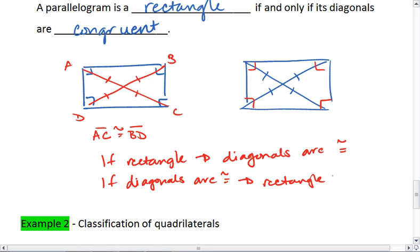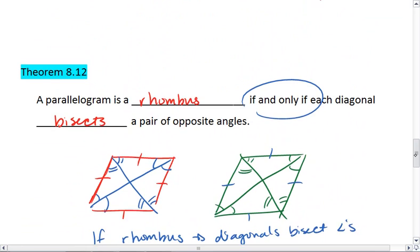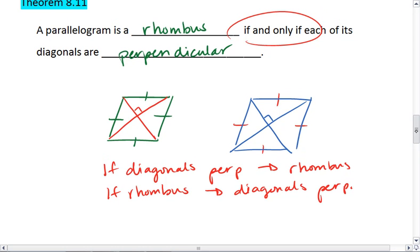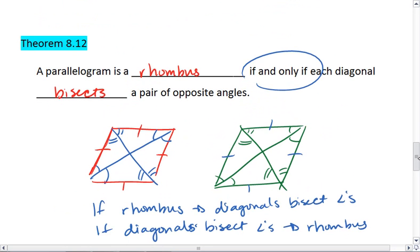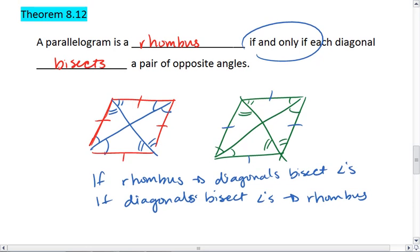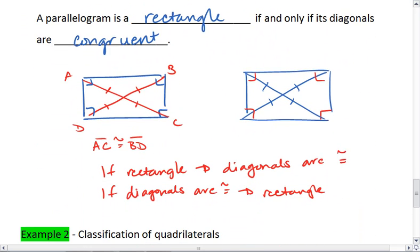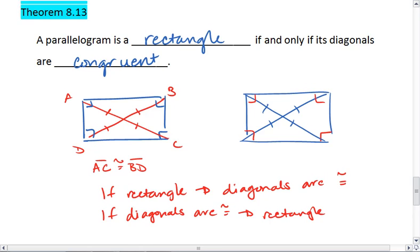Now notice all of these theorems had to do with diagonals. So to keep them straight: if diagonals are perpendicular, it's a rhombus. If they bisect an angle, it's a rhombus. If the diagonals are congruent to one another, then it is a rectangle.